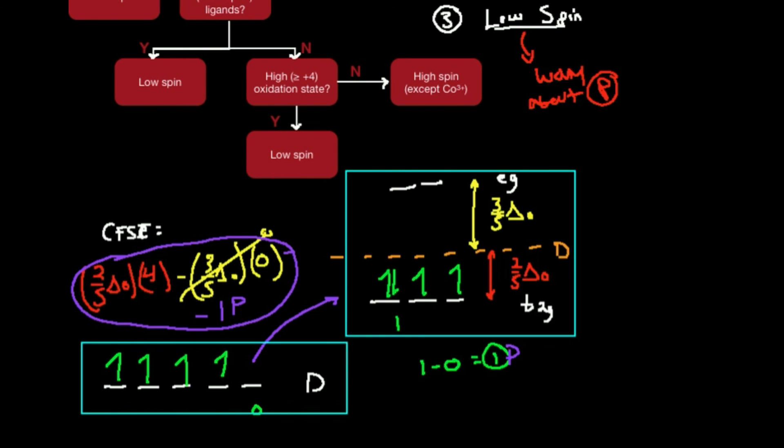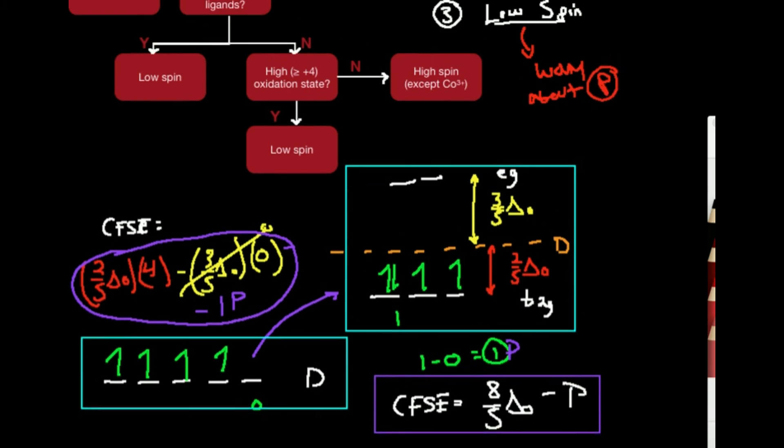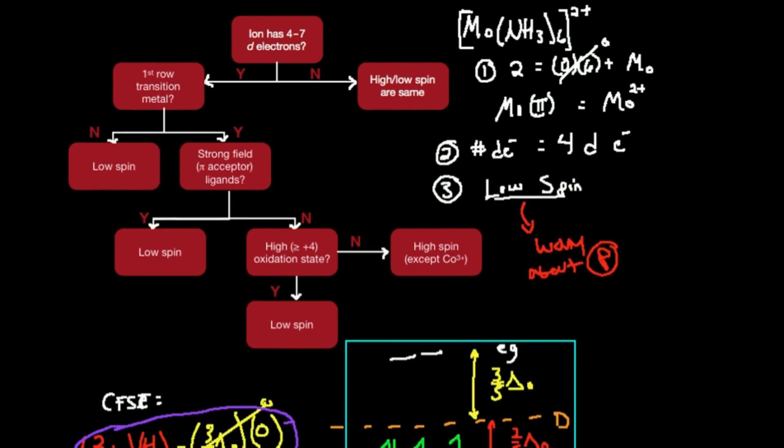In summary, our crystal field stabilization energy, two fifths times four, this is going to be eight fifths delta octahedral minus pairing energy. That is my answer for the crystal field stabilization energy for a low spin d4 metal. Thank you for watching this video. Make sure to like and subscribe for future videos. We're going to do some more examples in the next few videos.